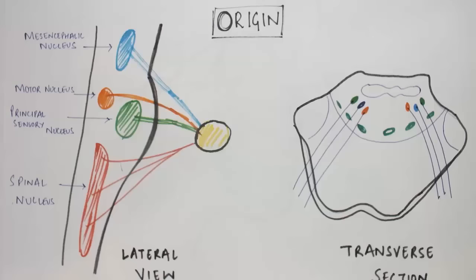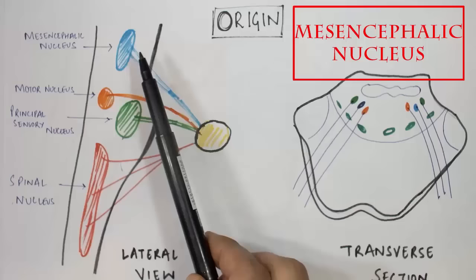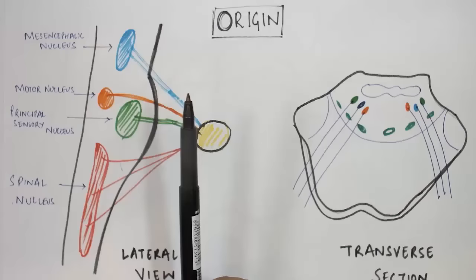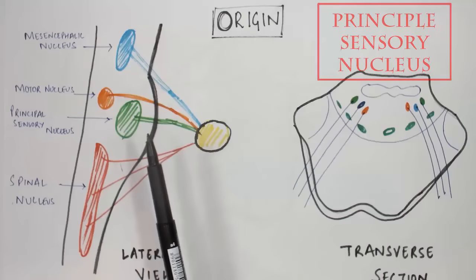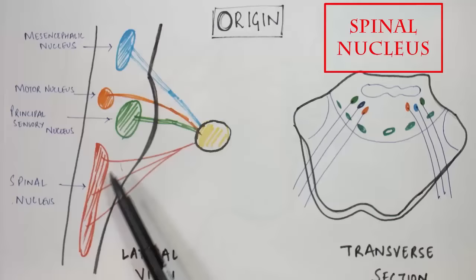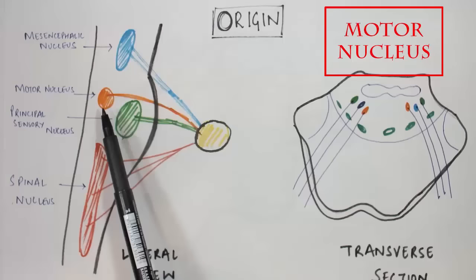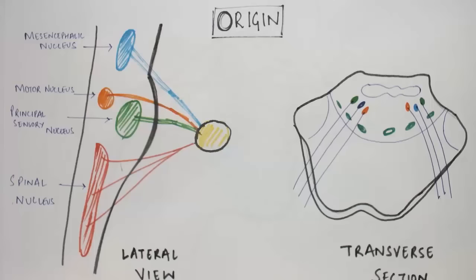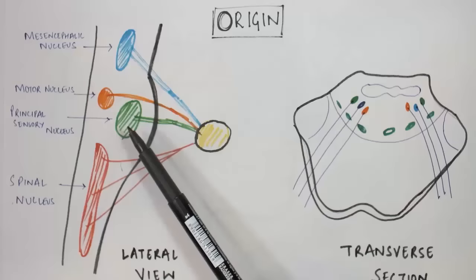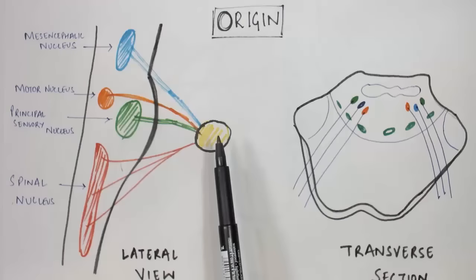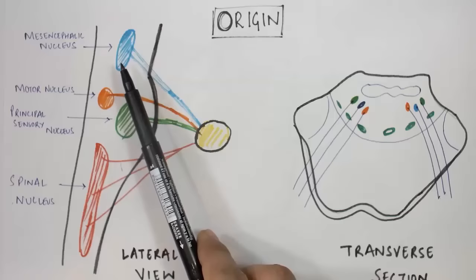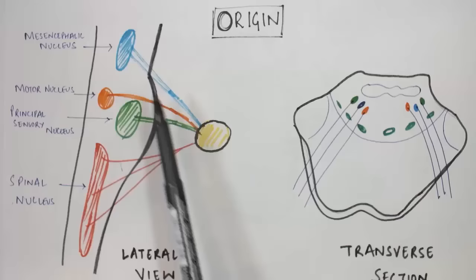The first nucleus is the mesencephalic nucleus, situated in the midbrain. The second sensory nucleus is the principal sensory nucleus, situated in the pons. The third is the spinal nucleus, a very long nucleus situated in the lower part of the medulla and upper spinal cord. These three nuclei — the mesencephalic, principal sensory, and spinal — are the afferent nuclei. They receive afferent nerve fibers from the trigeminal ganglion.